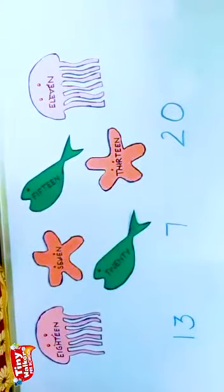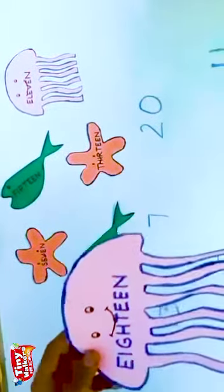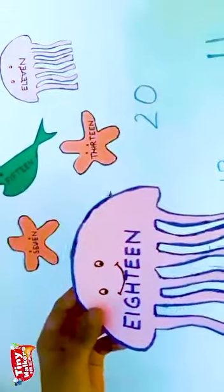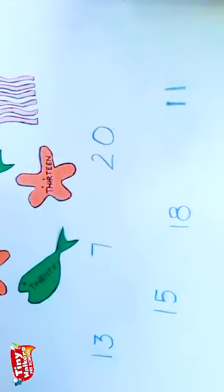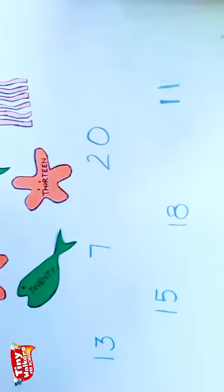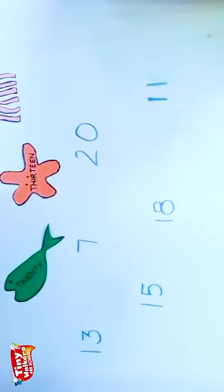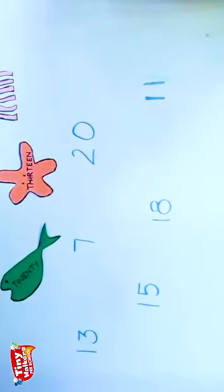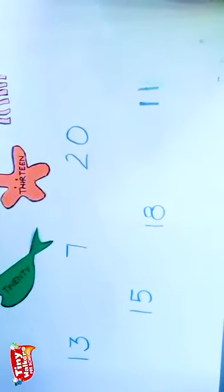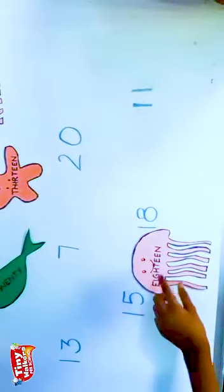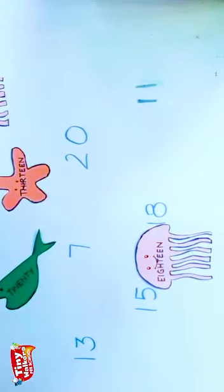See, what is written on the first card? E-I-G-H-T-E-E-N. It is eighteen. Is eighteen written here? Find it. How to write eighteen? One, eight, eighteen. So one, eight, eighteen is here? Yes. So we will keep the jellyfish near eighteen. E-I-G-H-T-E-E-N. Eighteen. Now let me take another card.